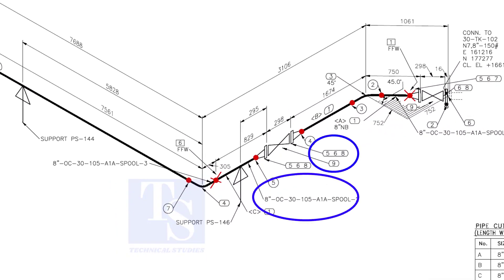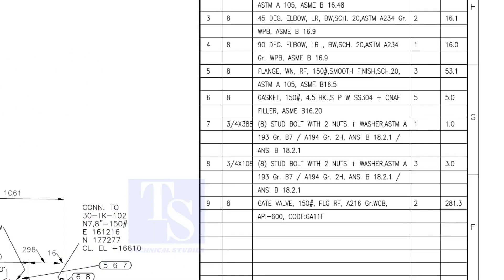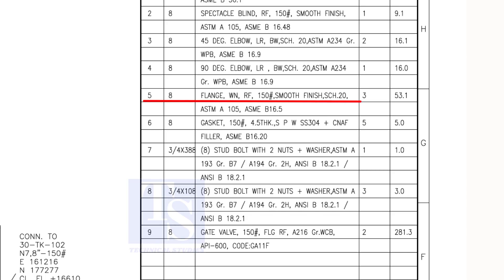In spool number 2, check what are the items 5, 6, and 8. We already know item number 1 is pipe. Item number 5 is weld neck raise face flange. The rating is 150 pound. Item number 6 is spiral wound gasket, and item number 8 is stud bolts. Both these items are not relevant for pre-fabrication, unless the pipe length is not affected.